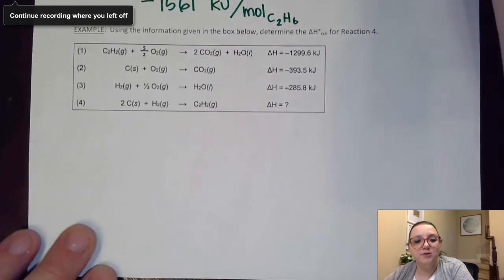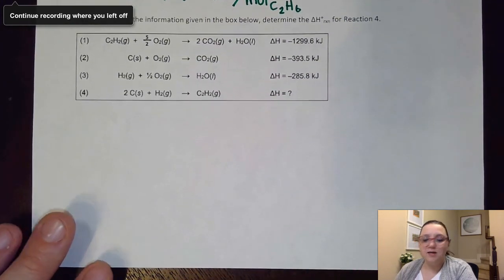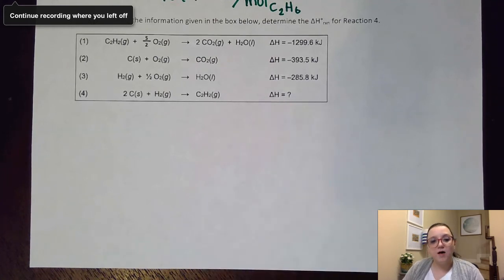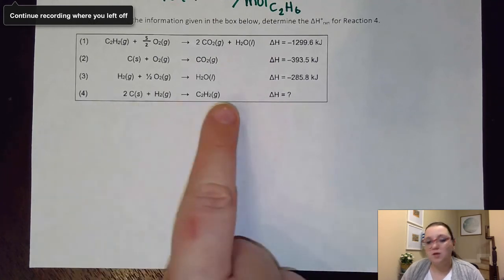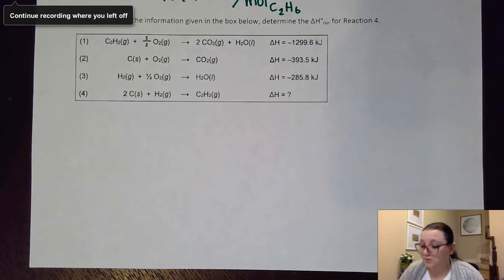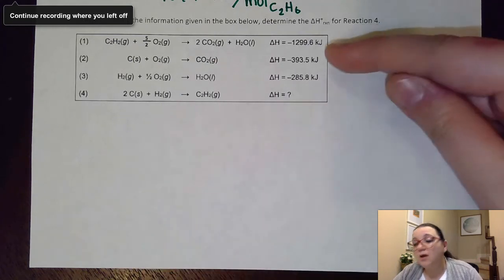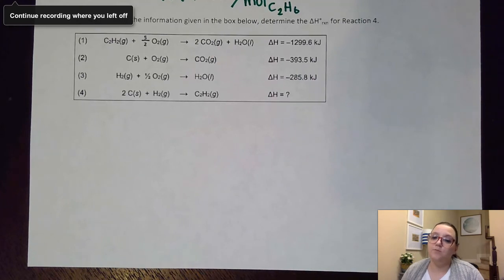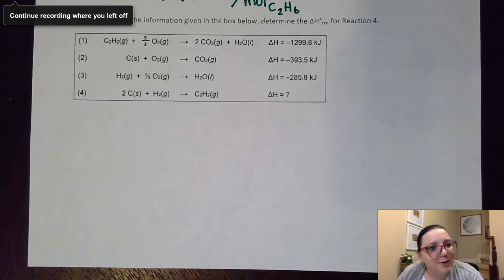I want you to pause the video and see if you can solve what the delta H value would be for reaction number four. It gives you three other reactions that you're going to need to manipulate and combine together to get this overall equation. You're going to have to do those same manipulations to the delta H values before you add them up. Go ahead and pause the video and try it out.